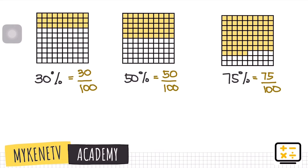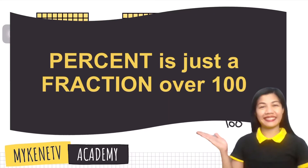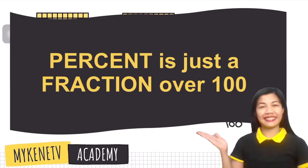So for example, if we have 8 percent, we just write 8 over 100. How about 92 percent? That is just 92 out of 100. Take note: percent is just a fraction over 100.